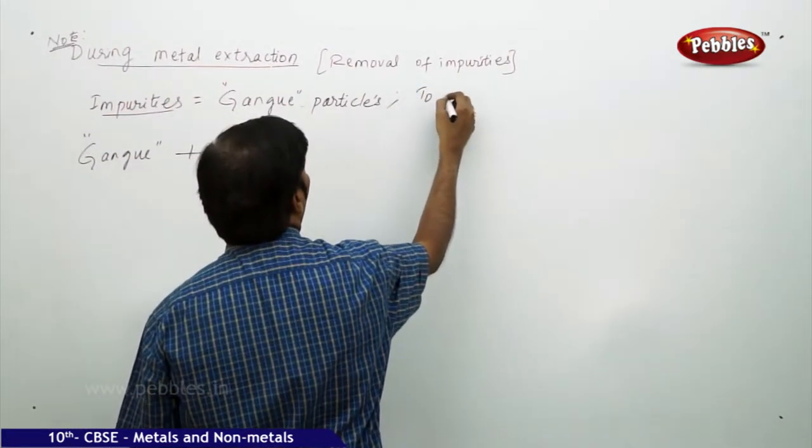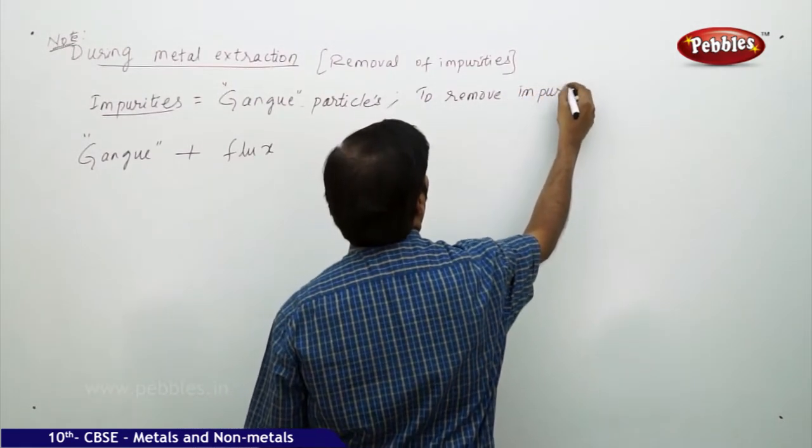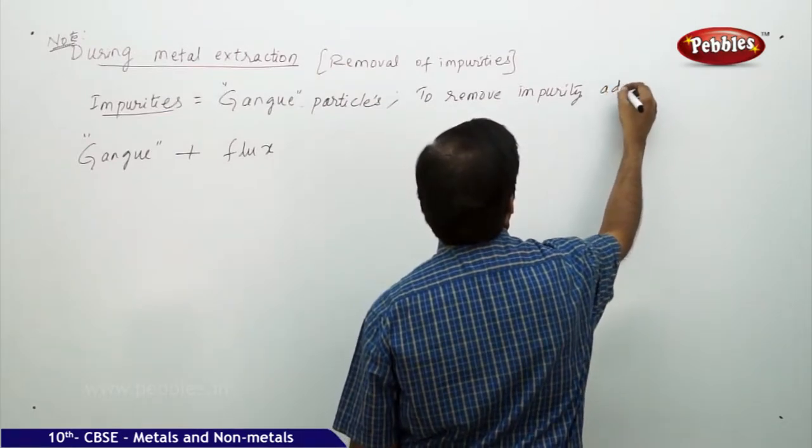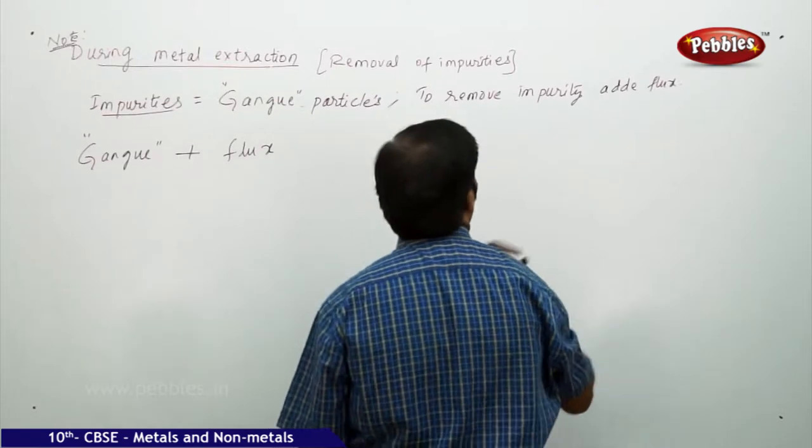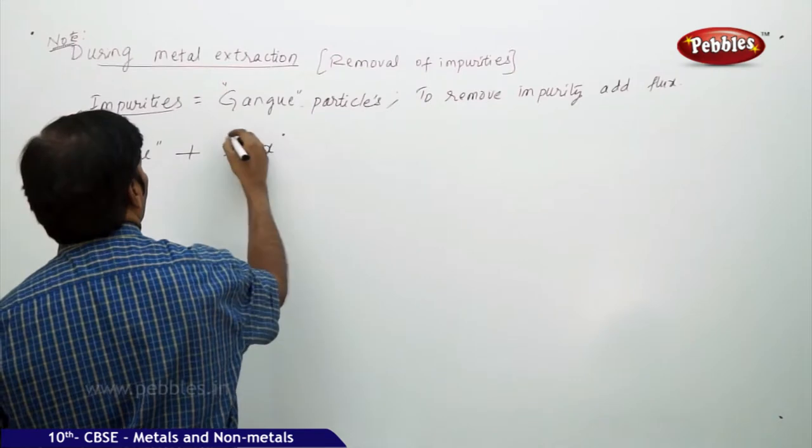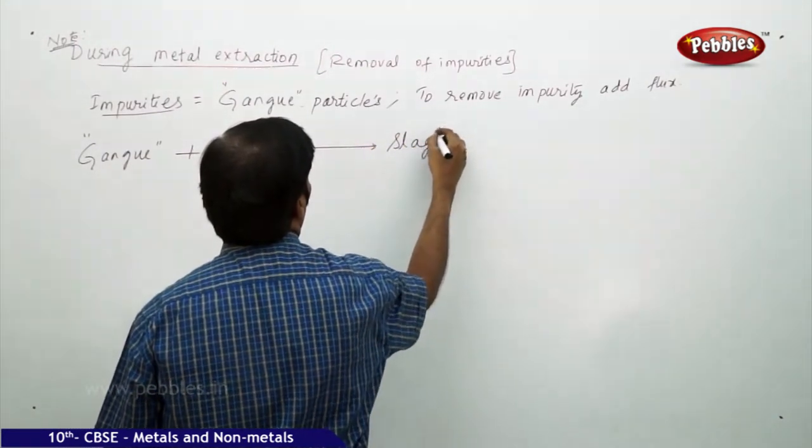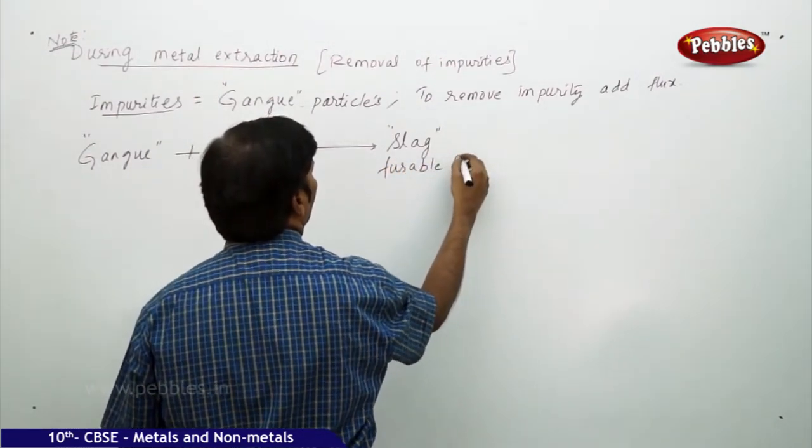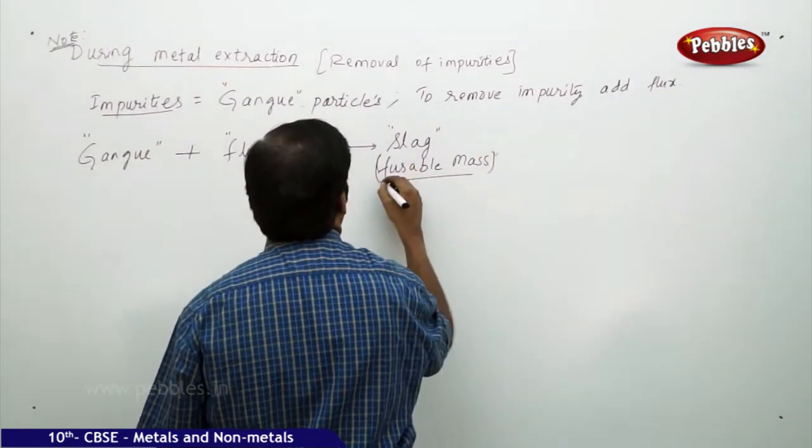To remove impurities, add flux. You should add flux. When you add flux to the gang particles, then you get slag. Slag is nothing but fusible mass.